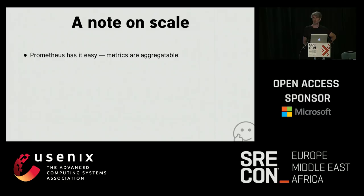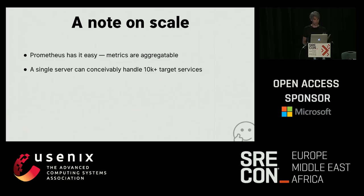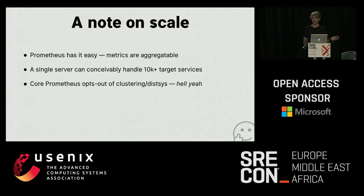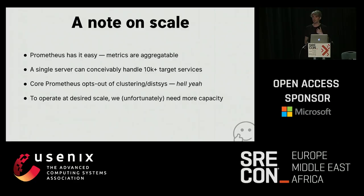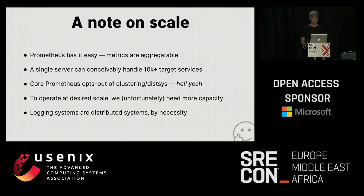A small note on scale. Prometheus has it easy because metrics are aggregatable — you can record a bunch and sum them up and the result is still an integer. A single Prometheus server can conceivably handle 10,000 or more target services, which is also a function of the pull model. Core Prometheus opts out of clustering and distributed systems stuff altogether, which is great because this stuff is hard. But for logging at the scale we want, we need more capacity than a single server can handle — logging systems are distributed systems by necessity in the cloud-native future.